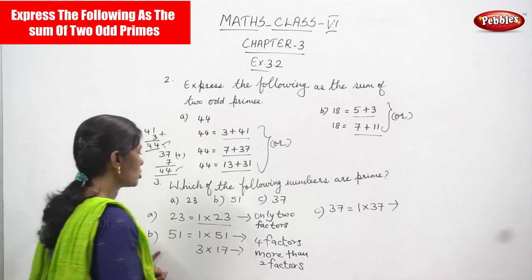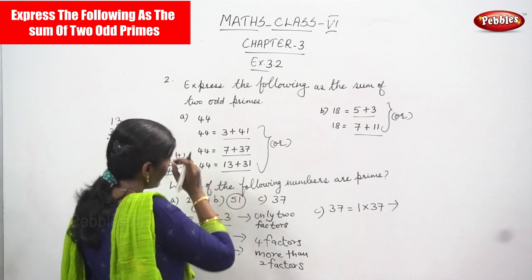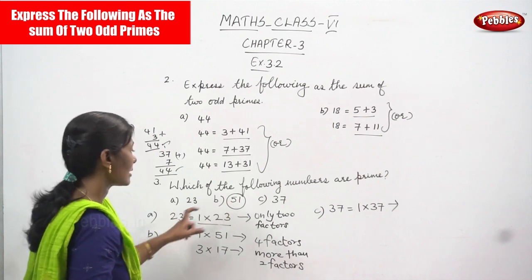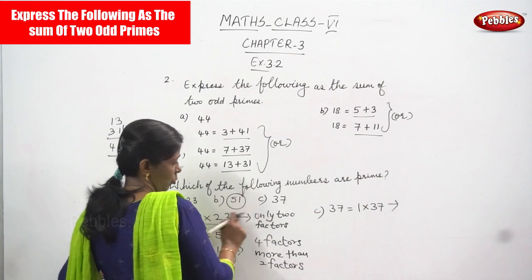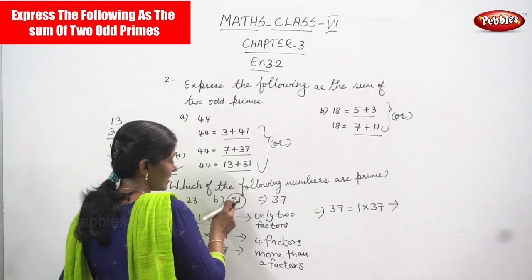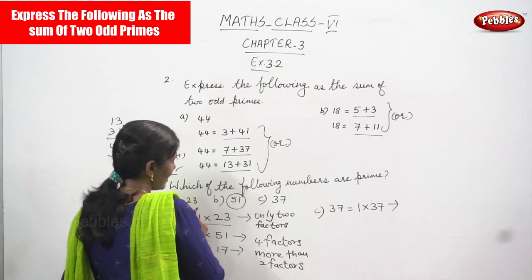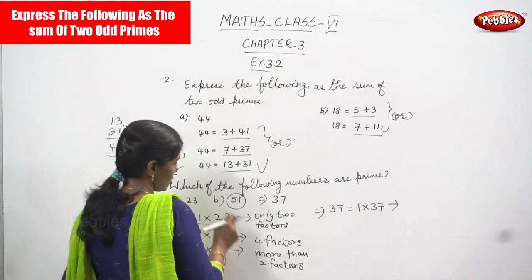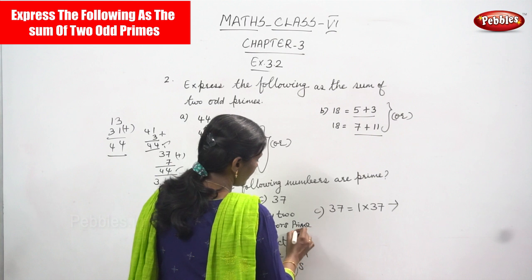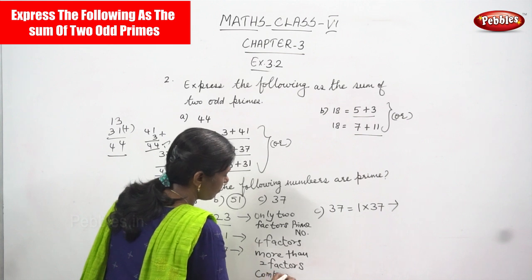Since 51 has more than 2 factors, it does not fall under the heading of prime numbers. So 51 is not a prime number — it is a composite number. And 23, having only two factors, is clearly a prime number. Two factors means it is a prime number.